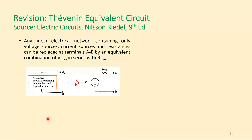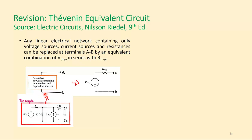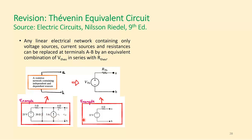Any linear electrical network containing only voltage sources, current sources, and resistances — whether independent or dependent — can be replaced at terminals A and B by an equivalent combination of just a voltage source VThevenin and a resistor RThevenin. For example, a resistive network with 25 volts, 3 amps, and resistances of 5, 20, and 4 ohms can be represented by a 32-volt source in series with an 8-ohm resistor.